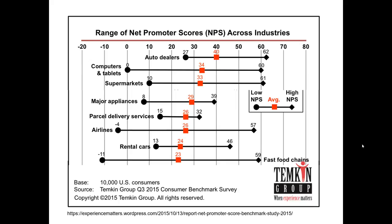In this chart, the Temkem Group reports some results for various companies for which they've calculated Net Promoter Scores across eight different industries. A few things pop out. Take a look at auto dealers — on average, the average auto dealer has the highest Net Promoter Score amongst all the industries shown here. Fast food chains have the lowest average Net Promoter Score. In addition, parcel delivery services have the smallest range (15 to 32), whereas fast food chains have the widest range, going all the way down to negative 11.